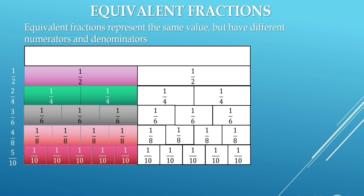The next topic is equivalent fractions. Equivalent fractions represent the same value but have different numerators and denominators. Here, we will find equivalent fractions of 1 half. Adding 2 one-fourths gives 2 upon 4; adding 3 one-sixths gives 3 upon 6; adding 4 one-eighths gives 4 upon 8; adding 5 one-tenths gives 5 upon 10. So 2 upon 4, 3 upon 6, 4 upon 8, and 5 upon 10 are equivalent fractions of 1 half.